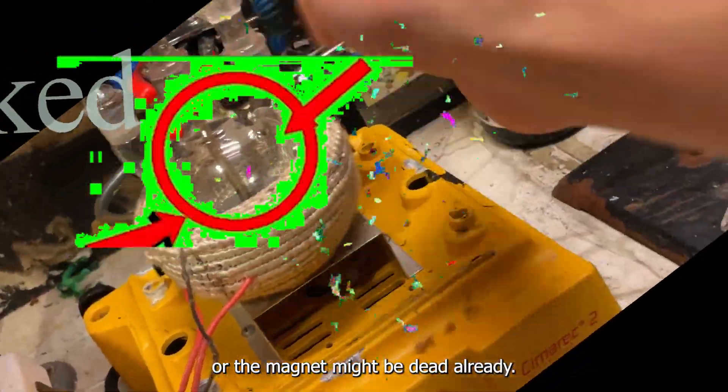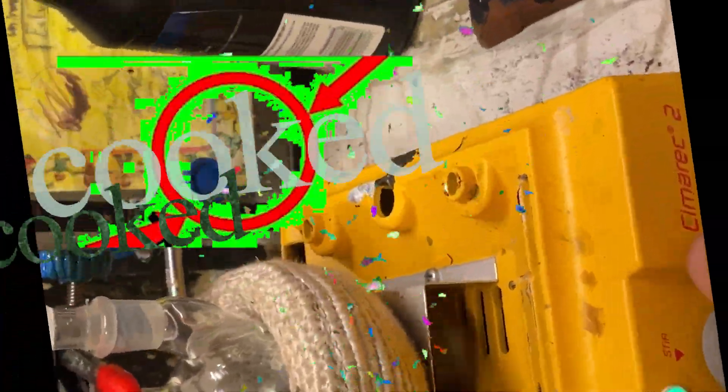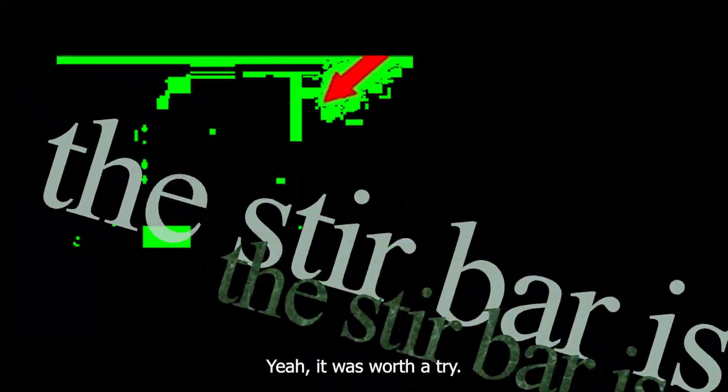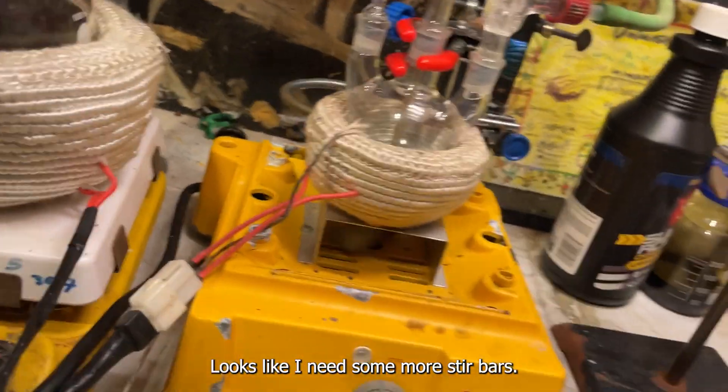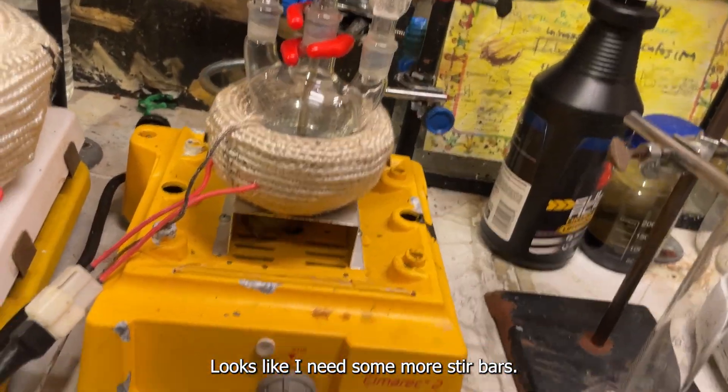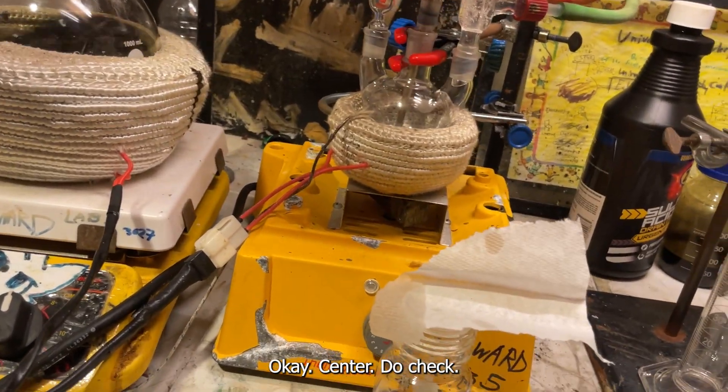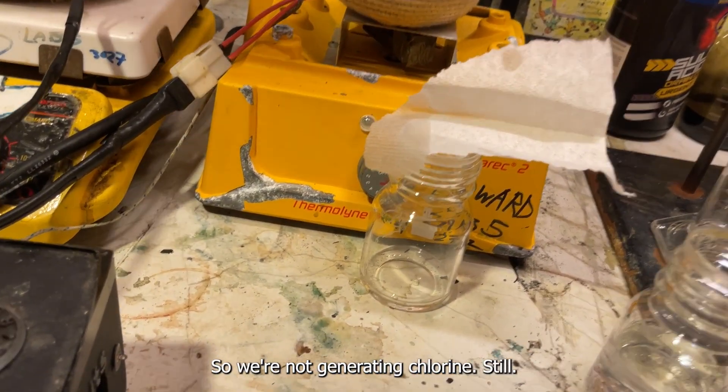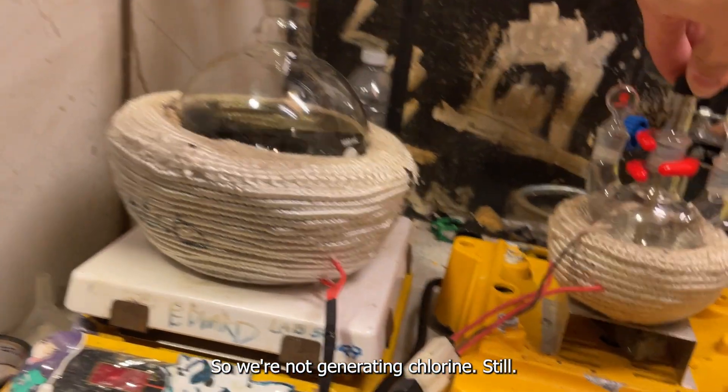I don't know, I've never done this reaction. I think it needs heat though. Okay, I got heat on full blast right now. So hopefully we should see a yellow hue and then we should get chlorine. Looks like I need some more stir bars. Okay, sanity check. That's some potassium bromide. If there's chlorine it should turn red, which it's not. So we're not generating chlorine still.